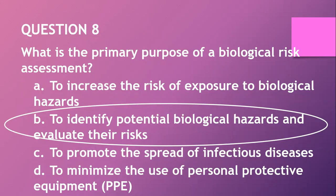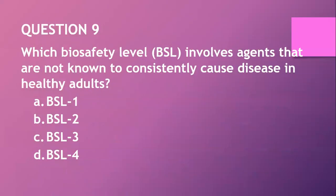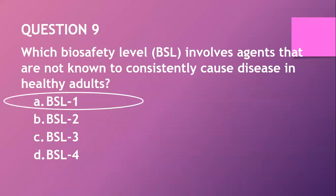Question nine: which biosafety level involves agents that are not known to consistently cause disease in healthy adults? A. BSL-1. B. BSL-2. C. BSL-3. D. BSL-4. The answer is A — BSL-1.